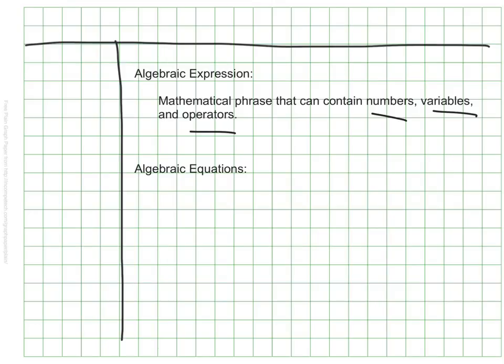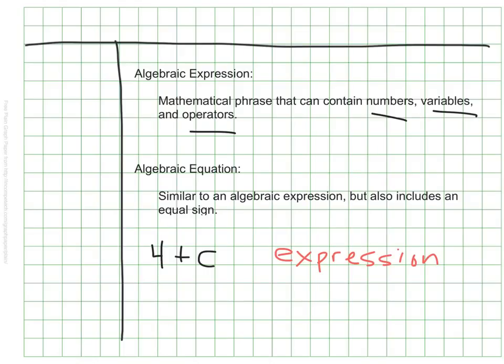An algebraic equation is similar to an algebraic expression, but it also, in addition to the other items, has an equal sign. Four plus C is an expression. Four plus C equals nine is an equation. Small difference there.